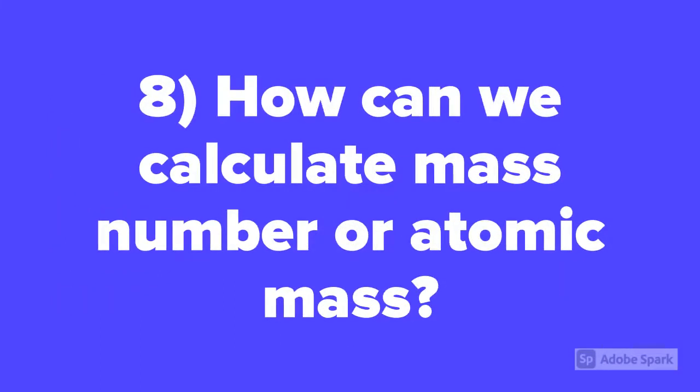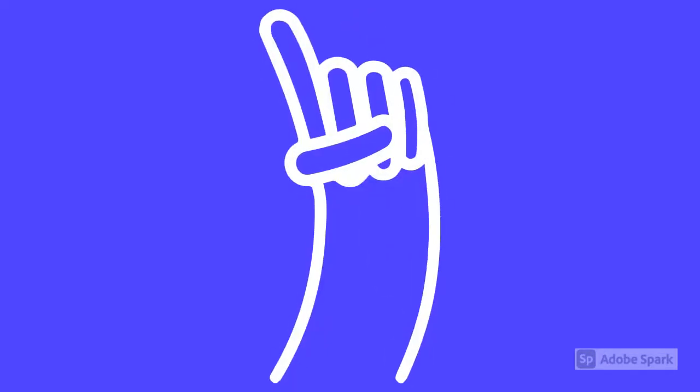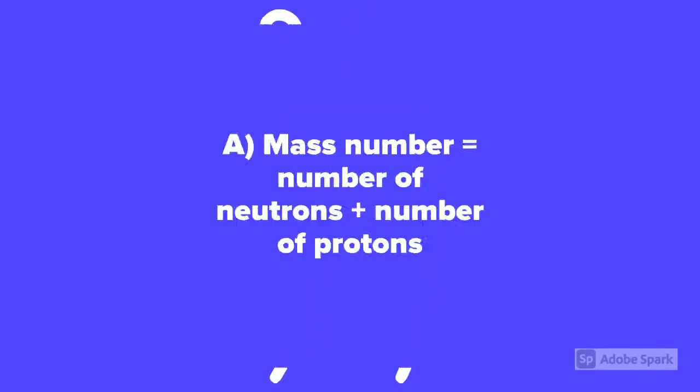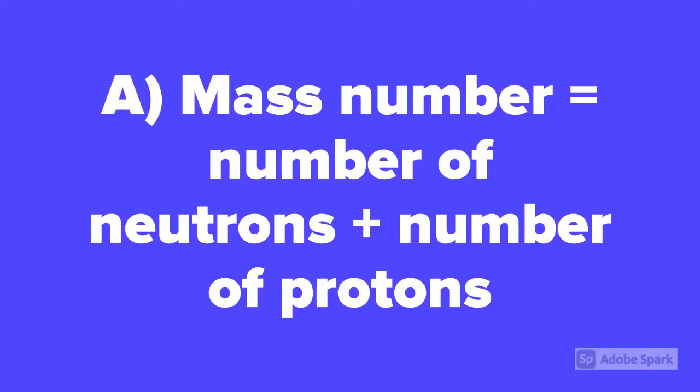Question number 8. How can we calculate mass number or atomic mass? Mass number is equal to the number of neutrons plus the number of protons.